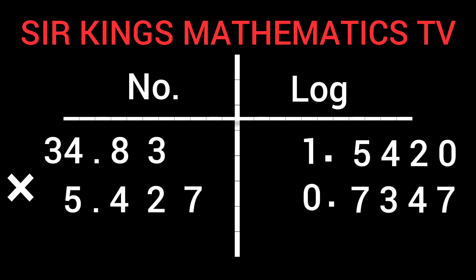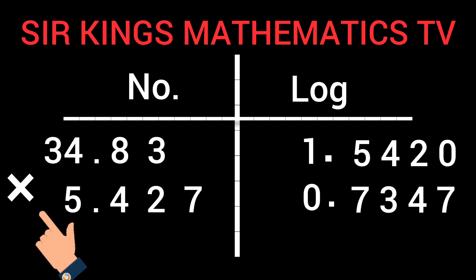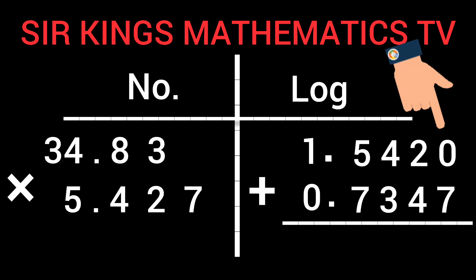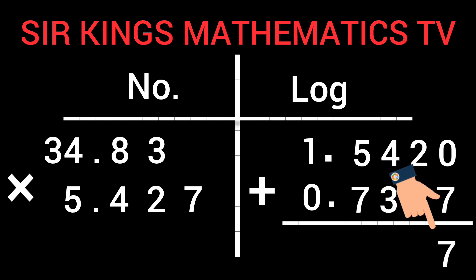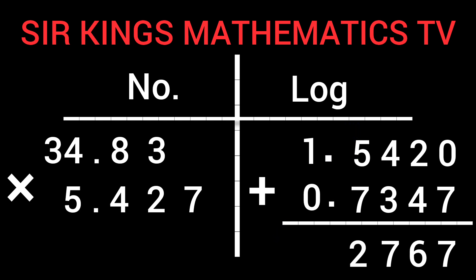Because of the multiplication, we are going to add the logarithms. 0 plus 7 gives us 7. 2 plus 4 gives us 6. Write it down. 4 plus 3 gives us 7. Write it down. 5 plus 7 gives us 12 — write down 2 and carry 1. Put the point here, which gives us 2. Write it here.